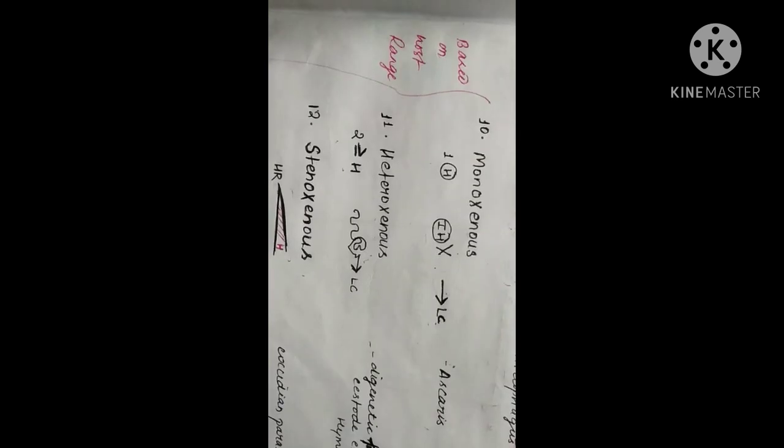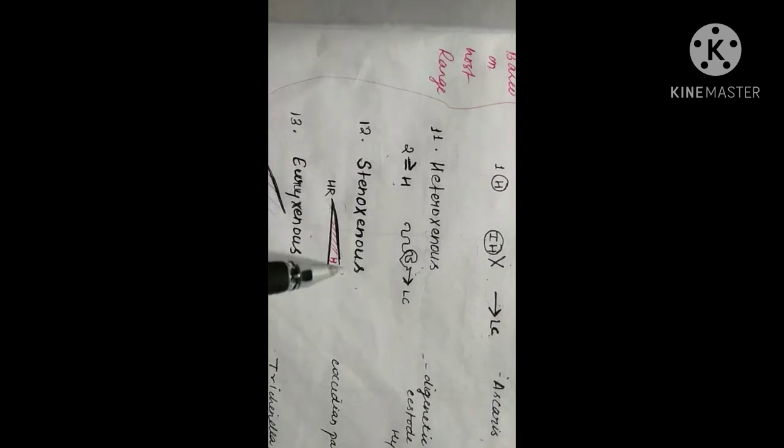The next is stenoxenous parasite. Stenoxenous parasites are those parasites having a narrow host range — thus the number of hosts in their cases is less. For example, coccidian parasites. Coccidian parasites affect poultry and cause coccidiosis.